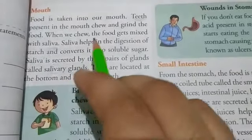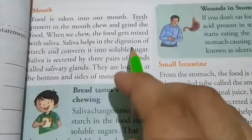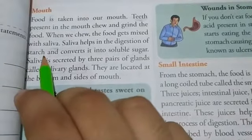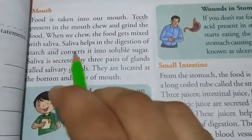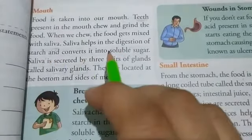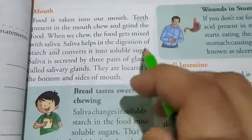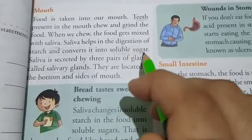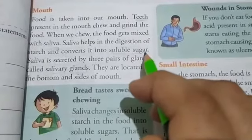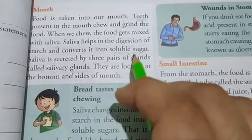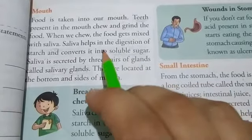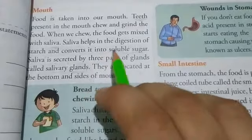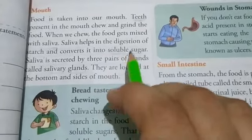So this saliva helps in the digestion of starch. Starch is an insoluble sugar which gets converted into soluble sugar called glucose. Soluble sugar is also known as glucose, the simple form of sugar. So saliva helps in the digestion of starch and converts it into soluble sugar.